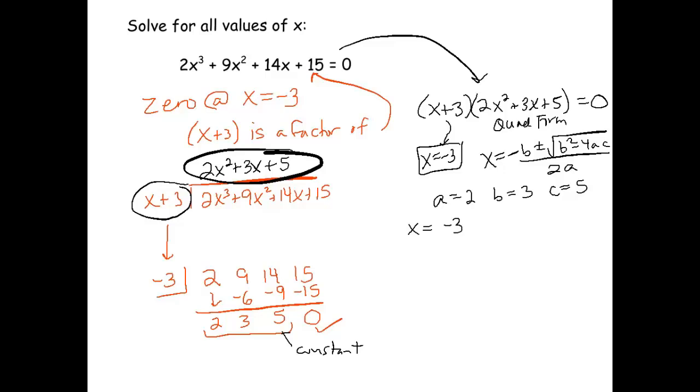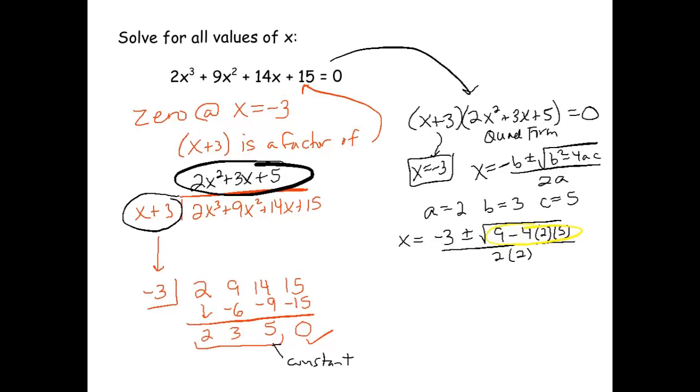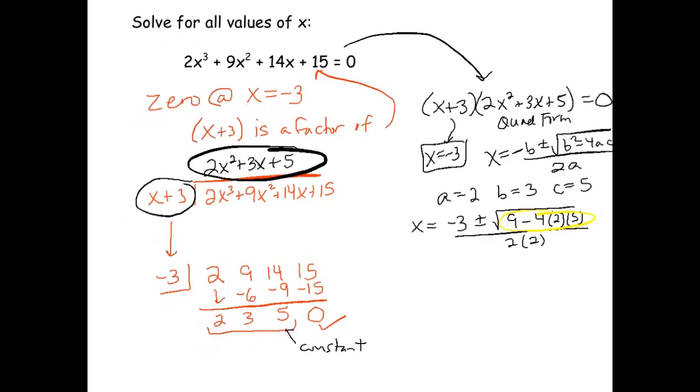So x equals negative 3 plus or minus the square root 3 squared. I'll just write 9 for now. Minus 4 times 2 times 5 all over 2 times 2. Now I'm going to put this part in my calculator. So I still have negative 3 plus or minus the square root. This turned out to be negative 31 over 4.